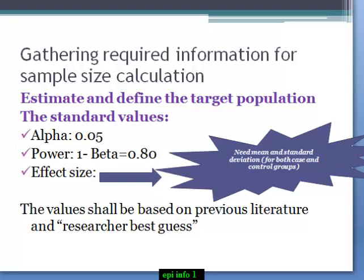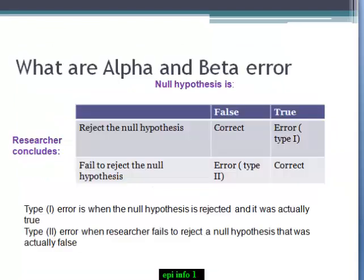What are the alpha and beta errors? When you set your research question, you have a null hypothesis. For example, there is no association between caffeine consumption and elevated systolic blood pressure.